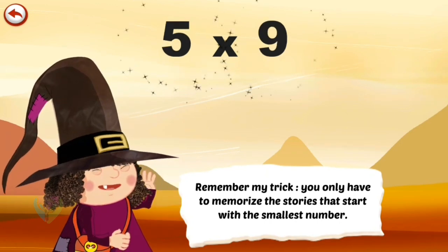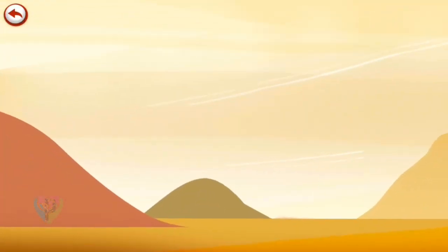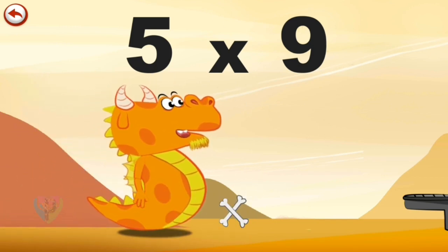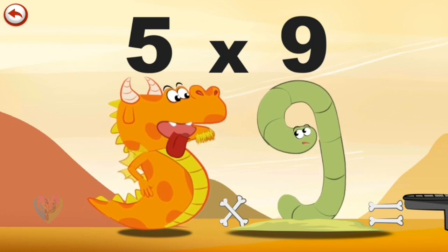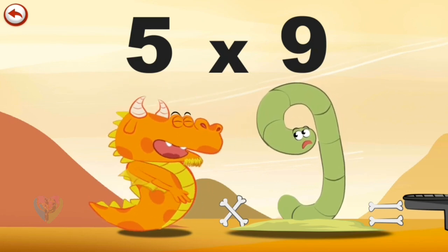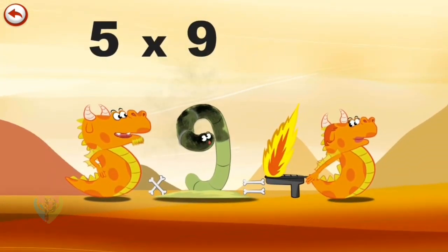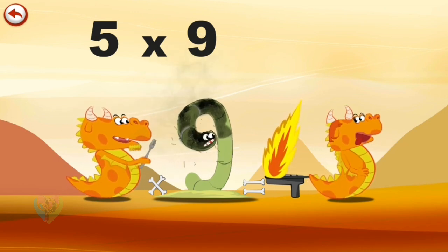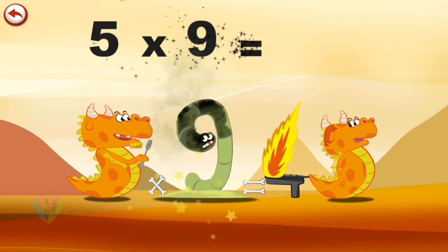Remember my trick: you only have to memorise the stories that start with the smallest number. What's the story of 5 times 9? When Flaming 5 meets Slimey 9 at dinner time, he hurries to breathe out a beautiful flame to light the barbecue in the shape of a 4 that Mrs. Flaming 5 has prepared. Dinner's ready! 5 times 9 is 45.